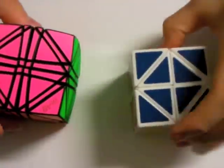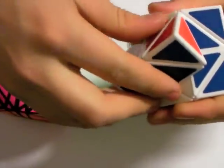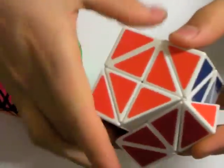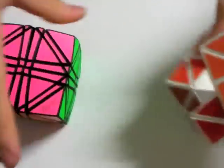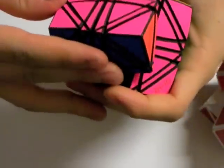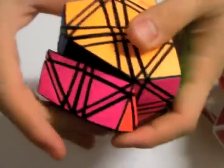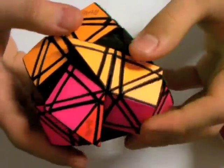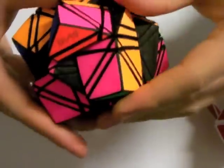And just like the original Helicopter Cube, which jumbles like this, and it can jumble on both layers.